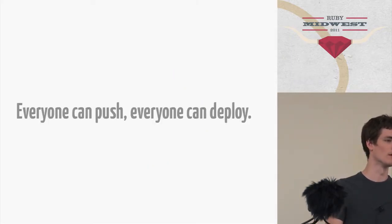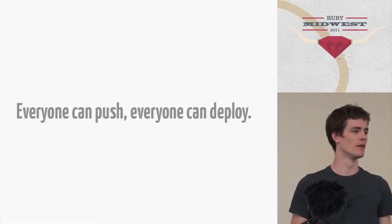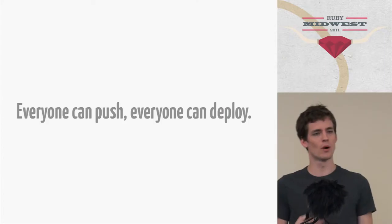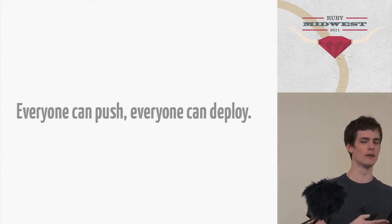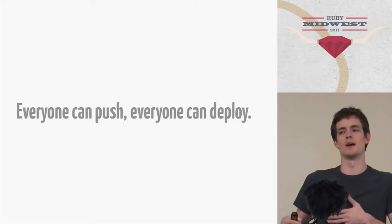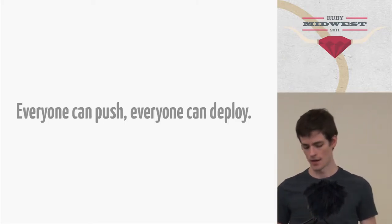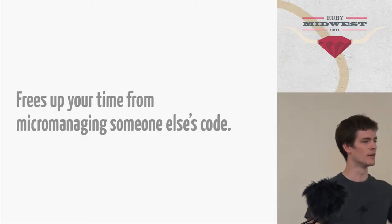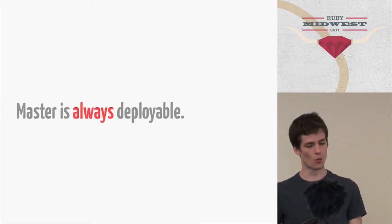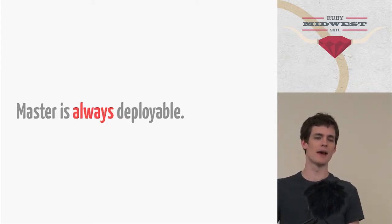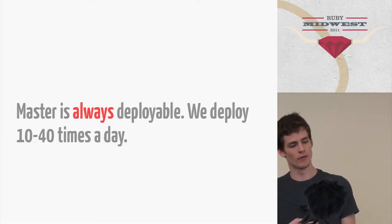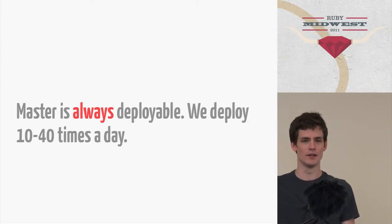Everybody can push. Everyone can deploy. Our designer on their first day can deploy to GitHub. We have a lot of automation surrounding deploying to the 50-plus servers we have now. We want people to have responsibility over the code that they actually write — too many times you push it to a release manager and it becomes their responsibility. We want people who write the code to be responsible. For us, master is always deployable. This is like the one hard rule at GitHub: if you push to master, assume it can be deployed as soon as it passes CI.